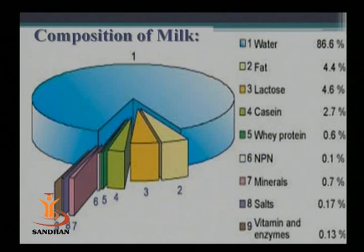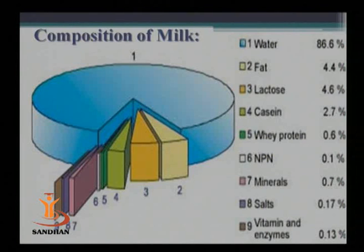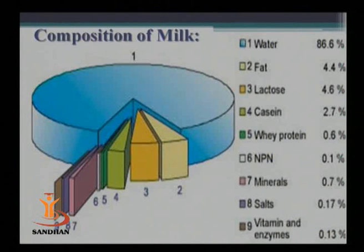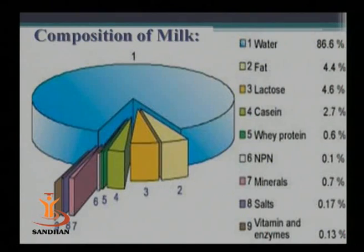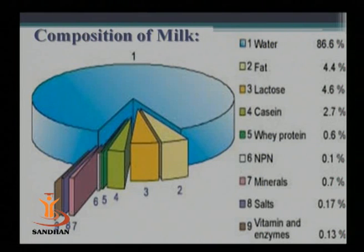Microorganisms can utilize milk in the form of carbon and nitrogen sources — lactose and casein respectively — and they will multiply and be produced in the milk. That is why milk is referred to as a best culture medium for microorganisms.